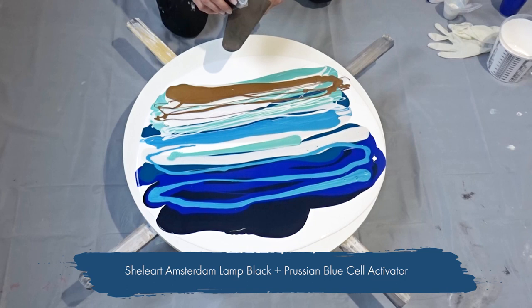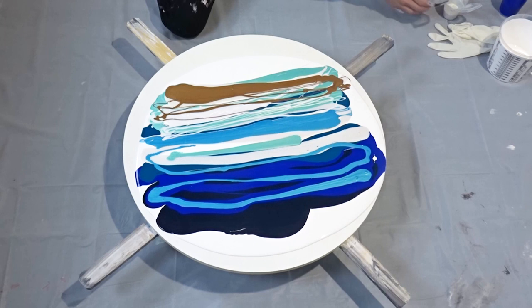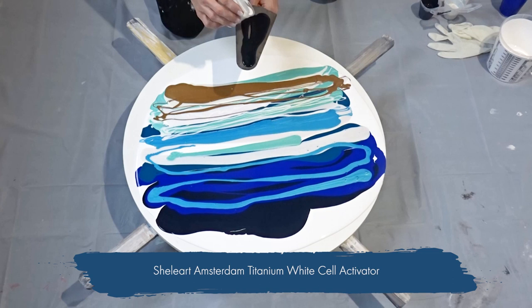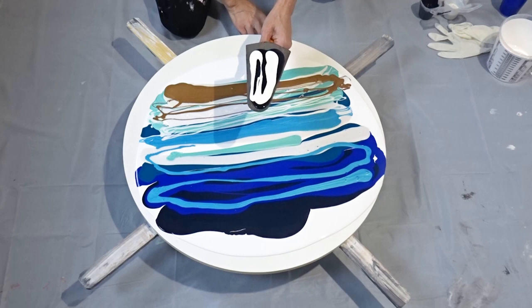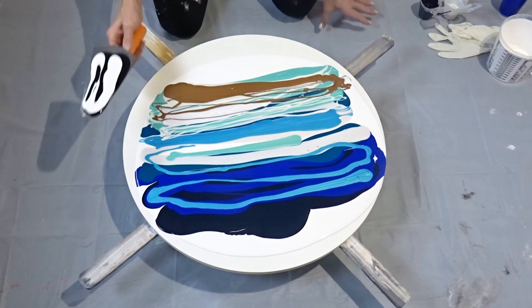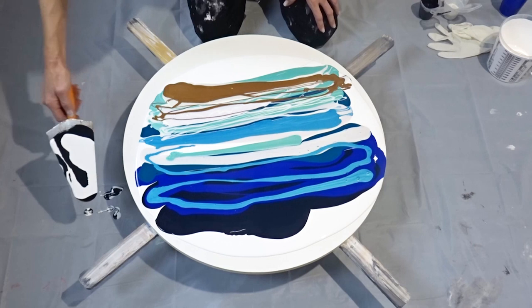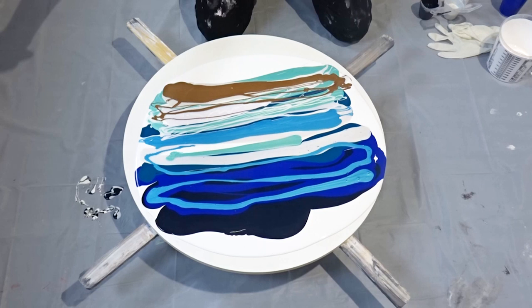Okay so I have got Amsterdam lamp black mixed with Amsterdam Prussian blue and I've also got a regular white cell activator that is just the Amsterdam titanium white I'm just going to load them onto my tool together like that and then I'm going to execute my first swipe I'm just going to get a little bit of that off okay here goes.